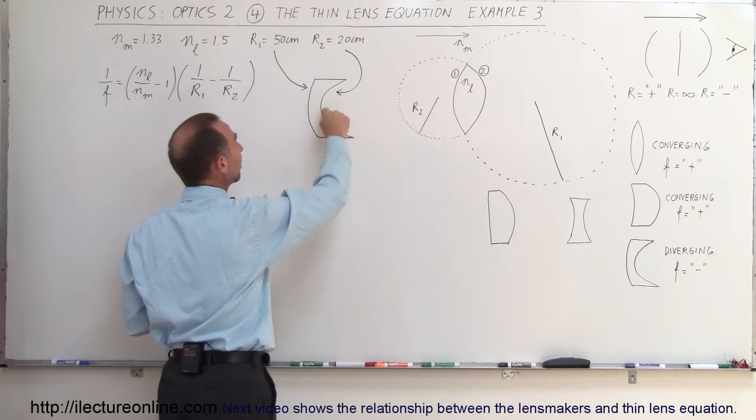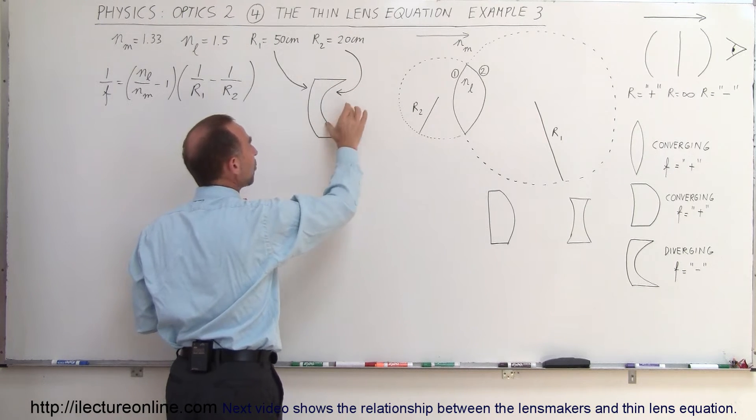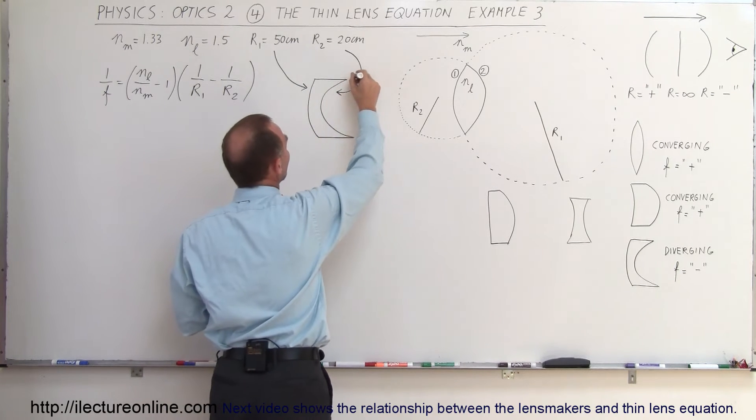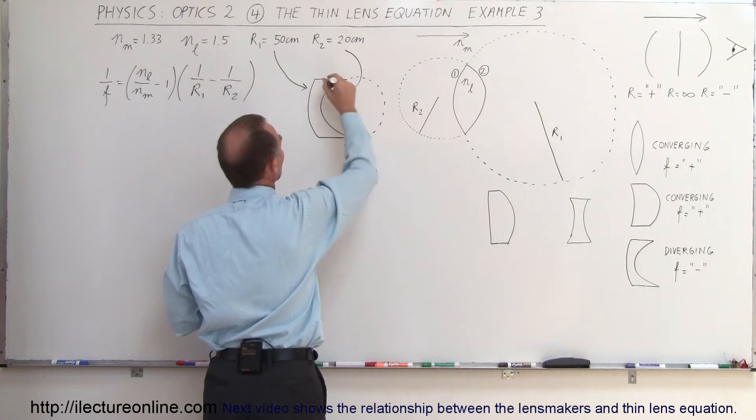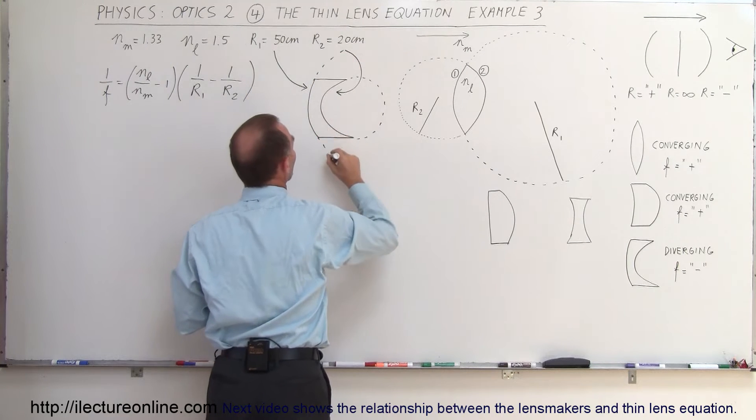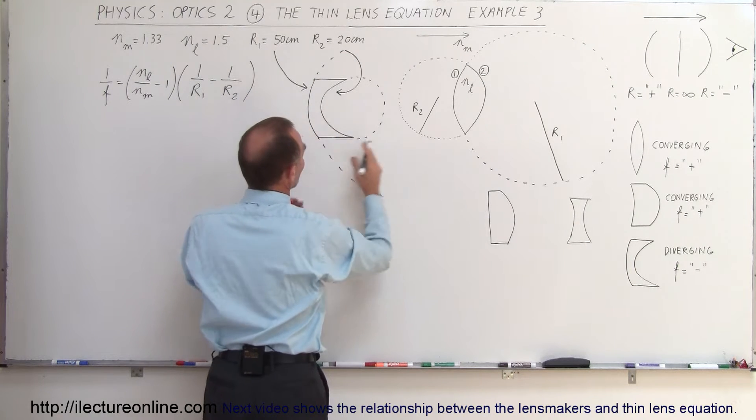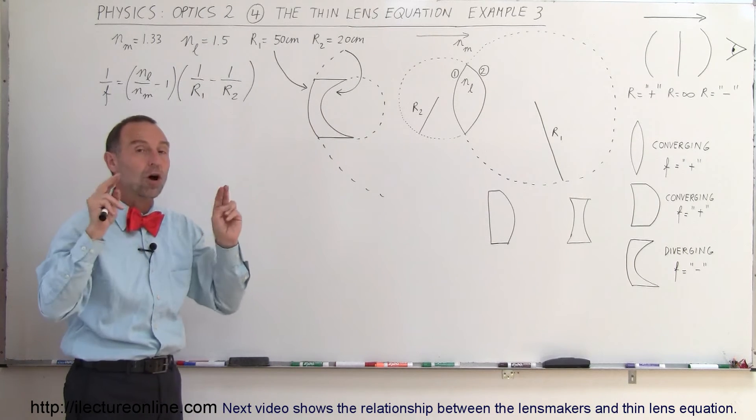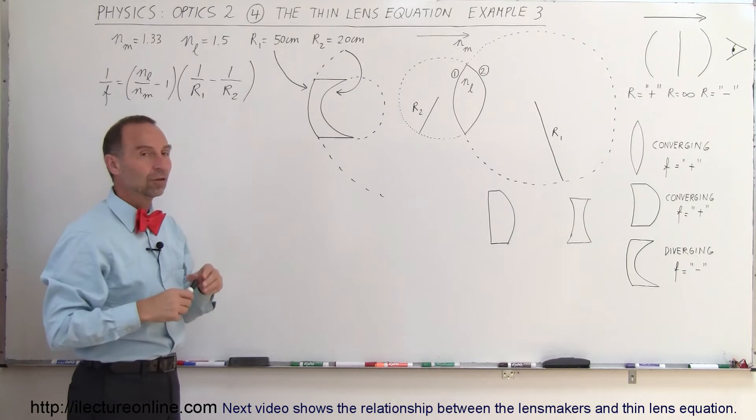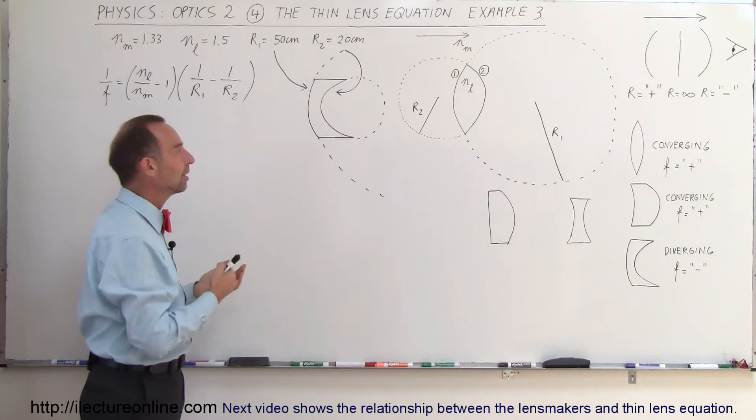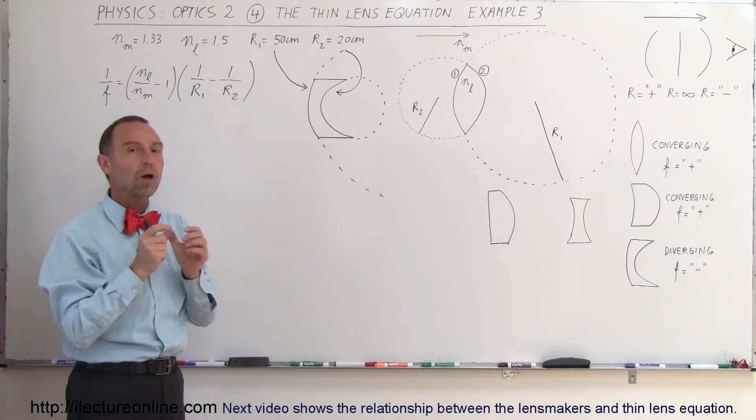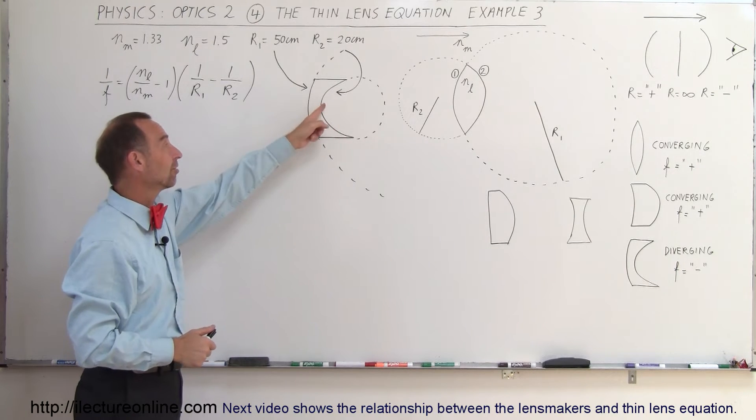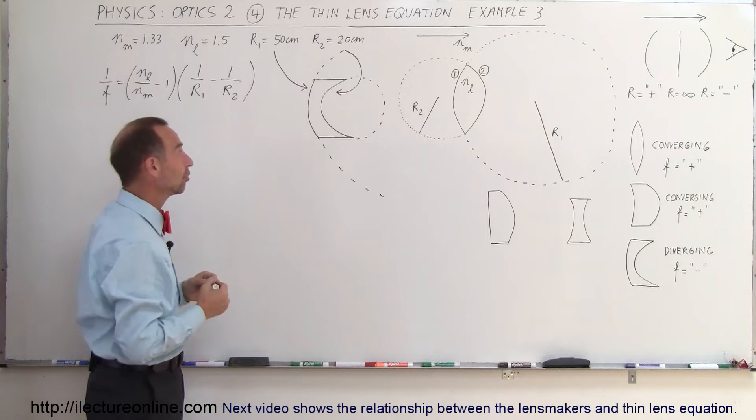Now notice that the radius of curvature of the back side is smaller than the radius of curvature of the front side of the lens and you can easily see that when you continue the curvature lines like this. You can see that the radius of curvature is much greater for the front side than the back side. The smaller the radius of curvature the stronger that side of the lens is, the smaller the focal length which makes it a stronger lens. So the back side wins over the front side which makes the whole lens a diverging lens.